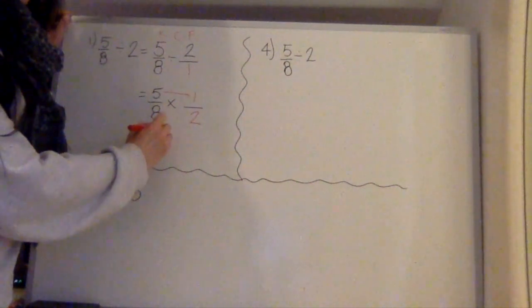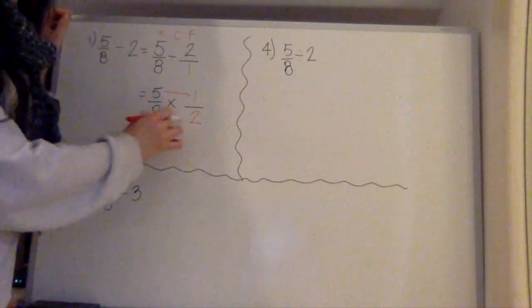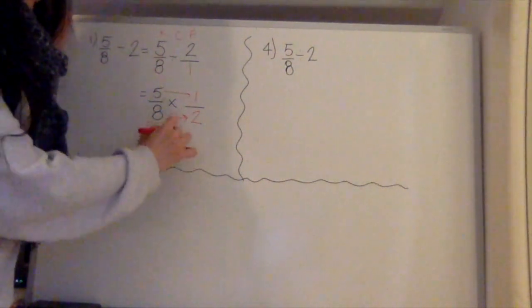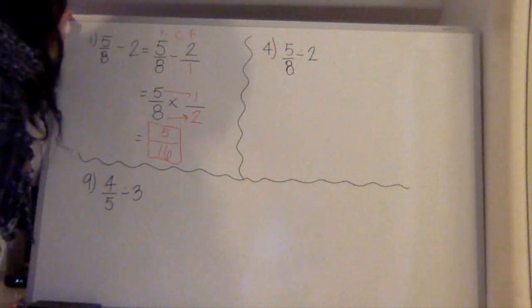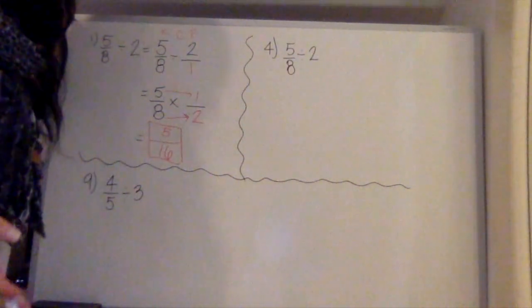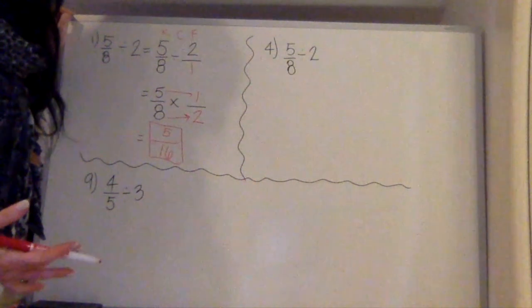5 times 1 is 5 over 8 times 2 is 16. Now I know that 5/16 is fully simplified without worrying about it because my numerator is a prime number, and the denominator is not a multiple of that prime number. I can be sure that I fully simplified it.